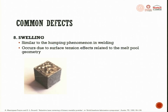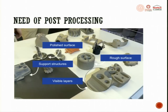Swelling is similar to the humping phenomenon in welding - it occurs due to surface tension effects related to the melt pool geometry. There is a swelling and humping effect, which is common in welding. Since in welding you also melt and pour material that solidifies, these defects are very common. Now that you have understood those defects, you have to work towards process optimization to get a good quality output.